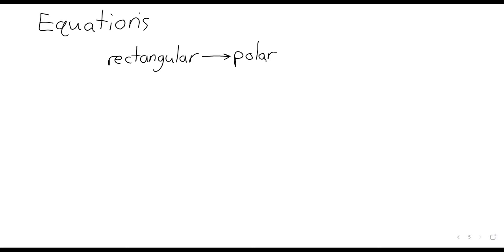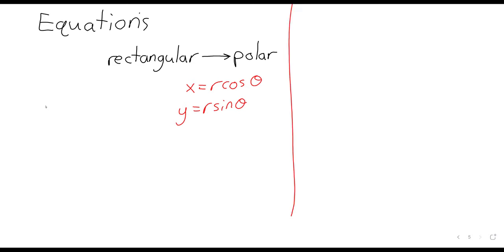You're unlikely to get a very nice-looking polar equation, but we can work with the following two statements: x equals r times the cosine of theta, and y equals r times the sine of theta.